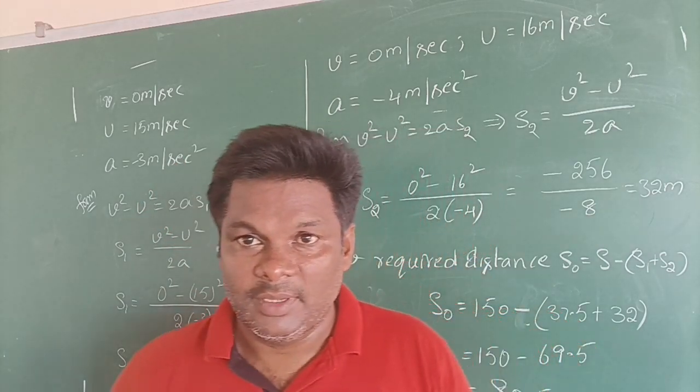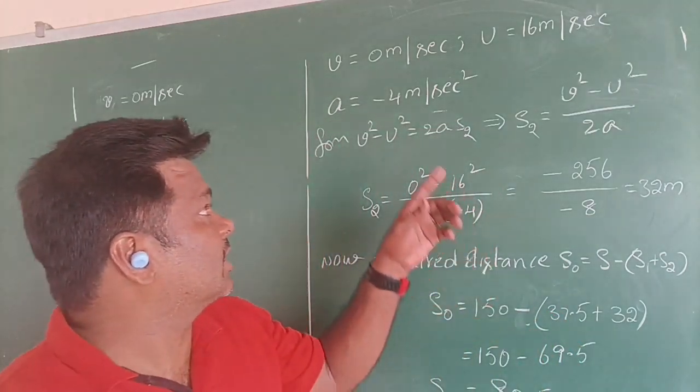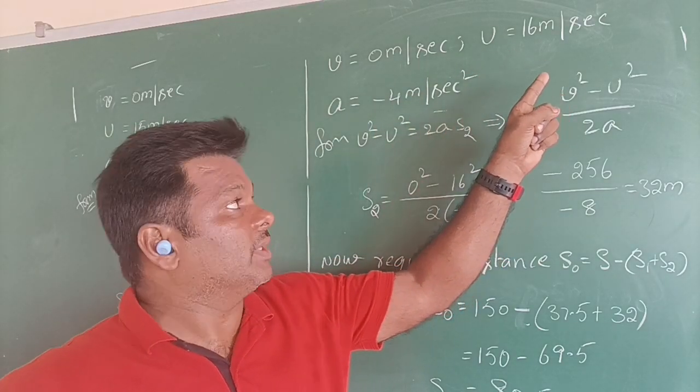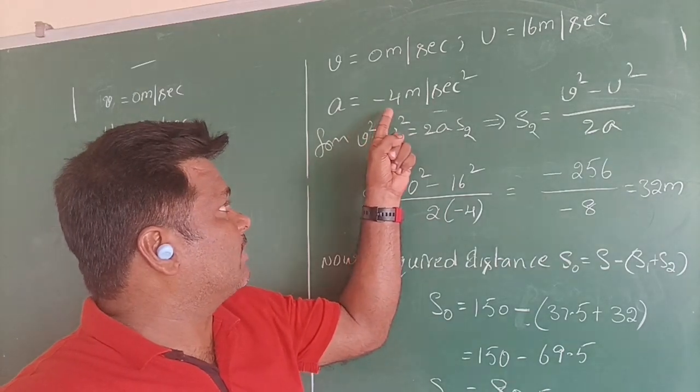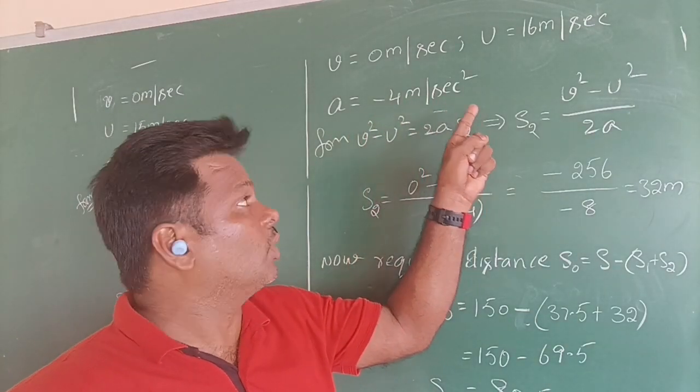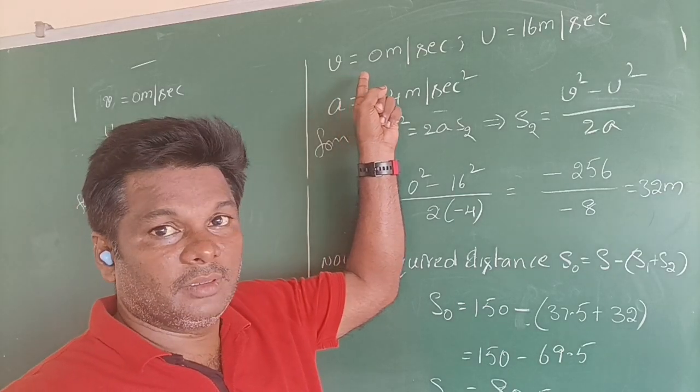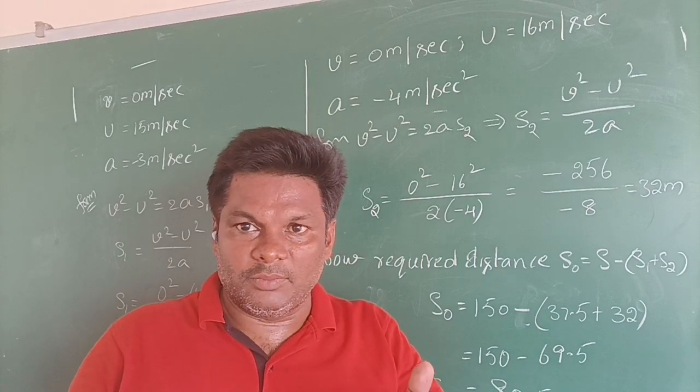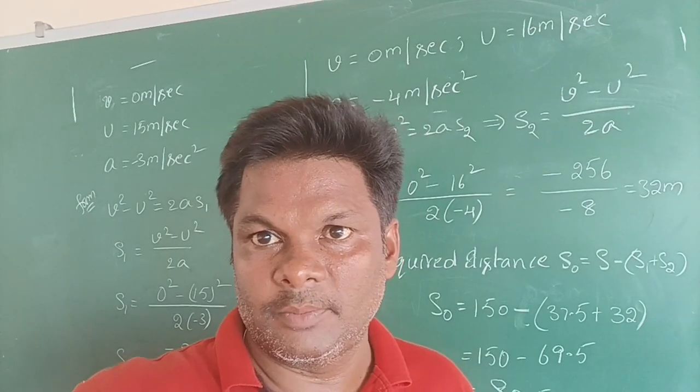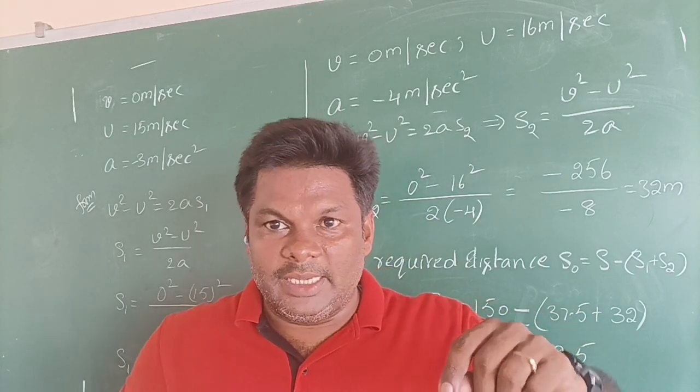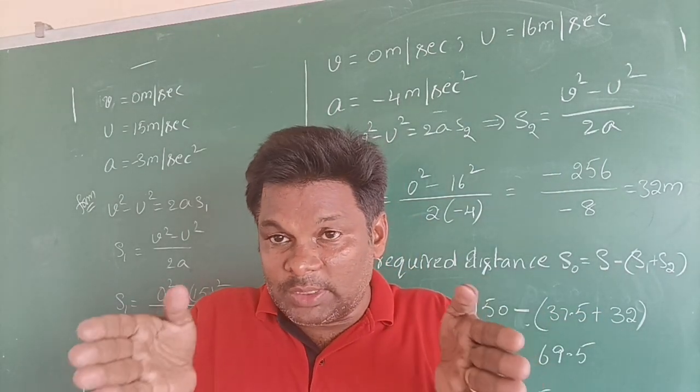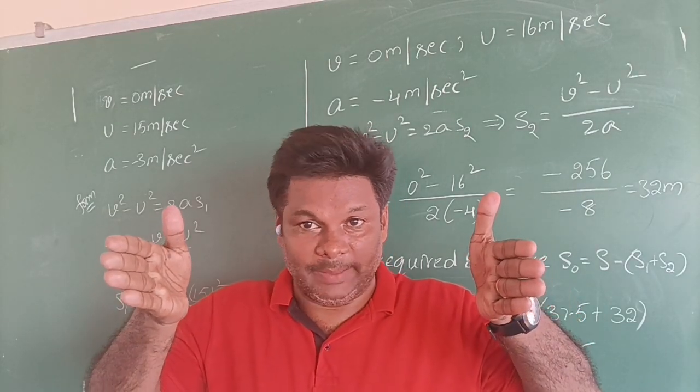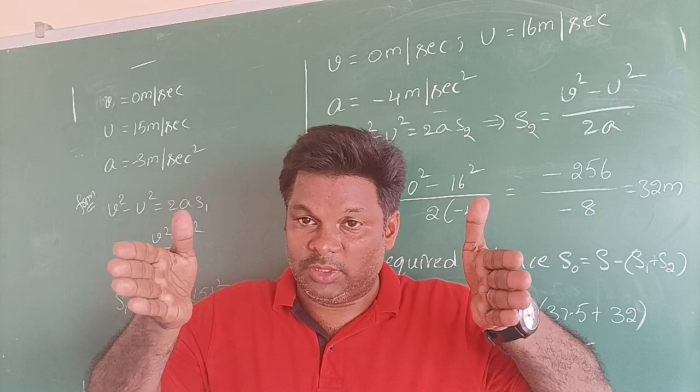At the same time, the second car, whose initial velocity u is equal to 16 meter per second, with deceleration a is equal to minus 4 meter per second square. So the driver will come to a halt after a certain time. Then whose velocity becomes 0 once again. So until their velocity becomes 0, they are 150 meters apart. Both drivers applied brakes. They are going somewhat forward and come to a halt.